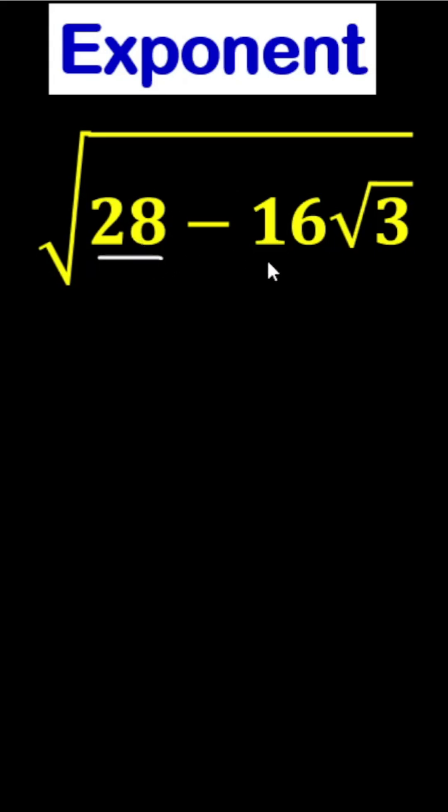Here is the square root of 28 minus 16 root 3. What is the common number? This is 28 and 16. We can take common factor 4, so we can write the square root of 4 times 7 minus 4 root 3.